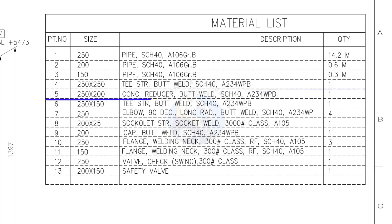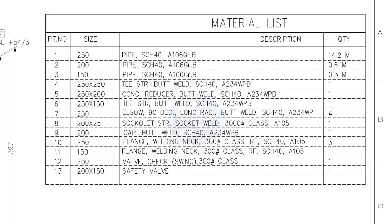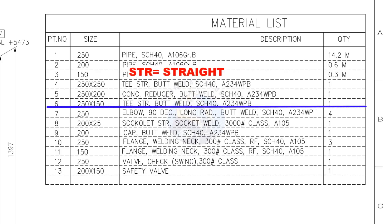Item number 5: 250 into 200, concentric reducer, butt welded, schedule 40. Quantity is 1. Item number 6: 250 into 150, straight tee, butt welded, schedule 40. Quantity: 1.